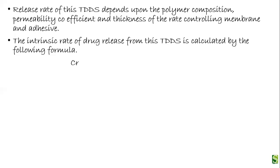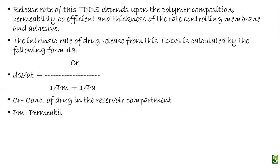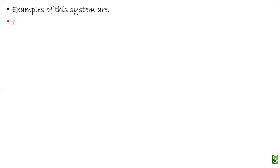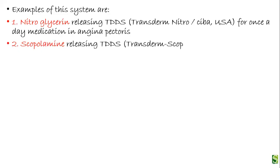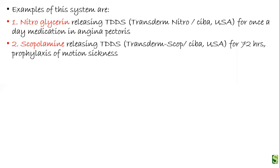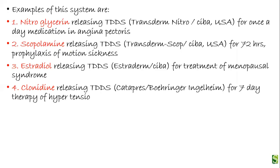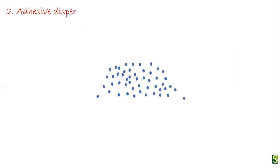The intrinsic rate of drug release from this system is calculated by the formula: dQ/dt = Cr / (1/Pm + 1/Pa), where Cr is the concentration of the drug in the reservoir compartment, Pm is the permeability coefficient of the membrane, and Pa is the permeability coefficient of the adhesive. Examples include a nitroglycerin-releasing system for angina pectoris (once daily), scopolamine for motion sickness (72 hours), estradiol for menopausal symptoms, clonidine for hypertension (7-day therapy), and a prostaglandin derivative transdermal system.